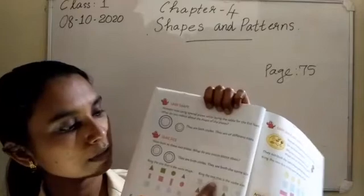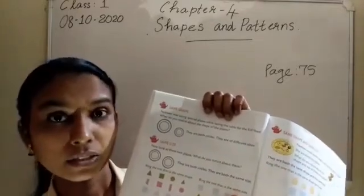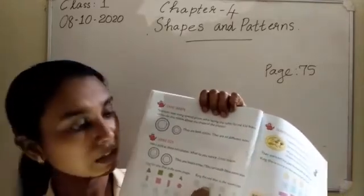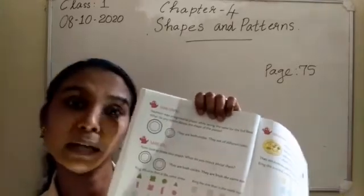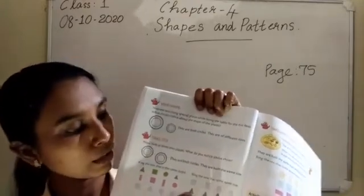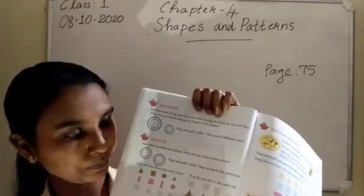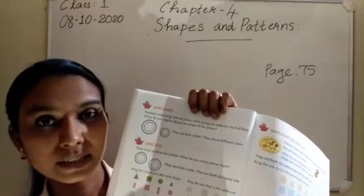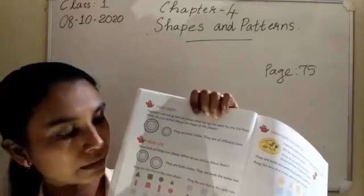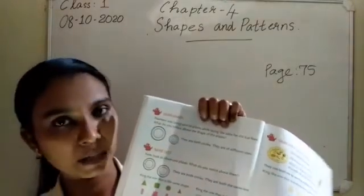Next, circle the one that is the same size. Here there is a square - which looks like the same? Here also there is a triangle - circle which looks like the same. Next there is a rectangle - which one looks like the same?